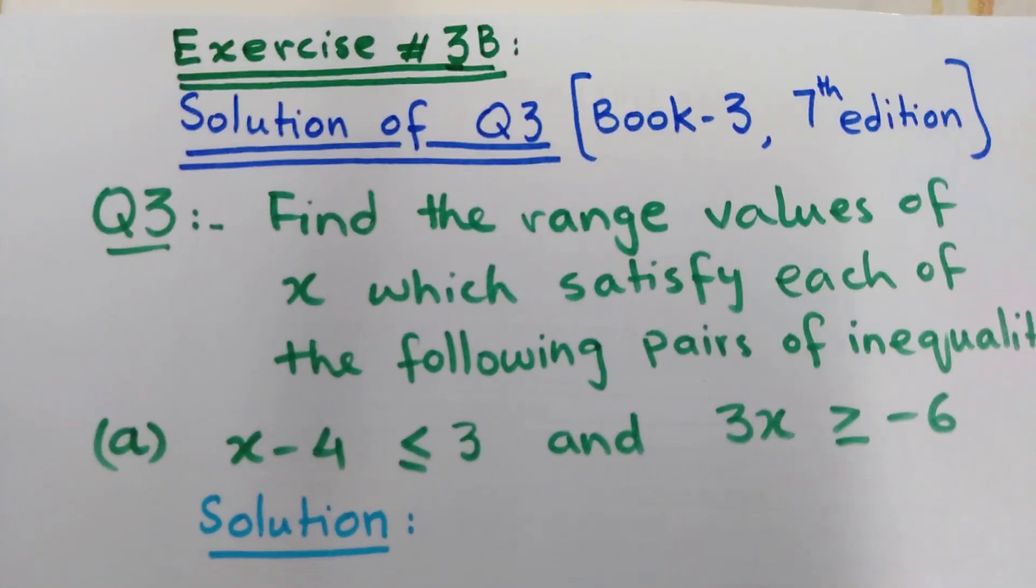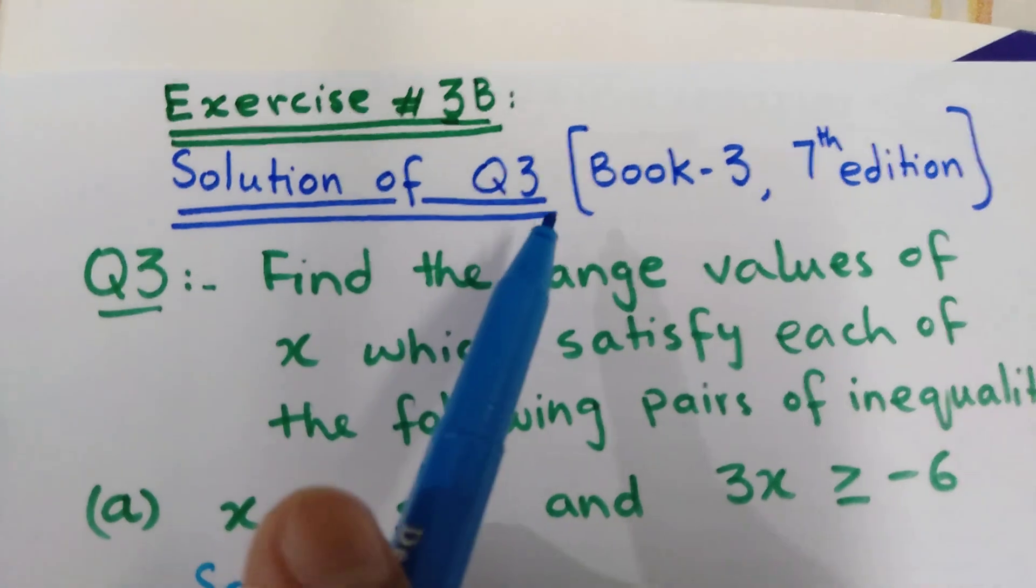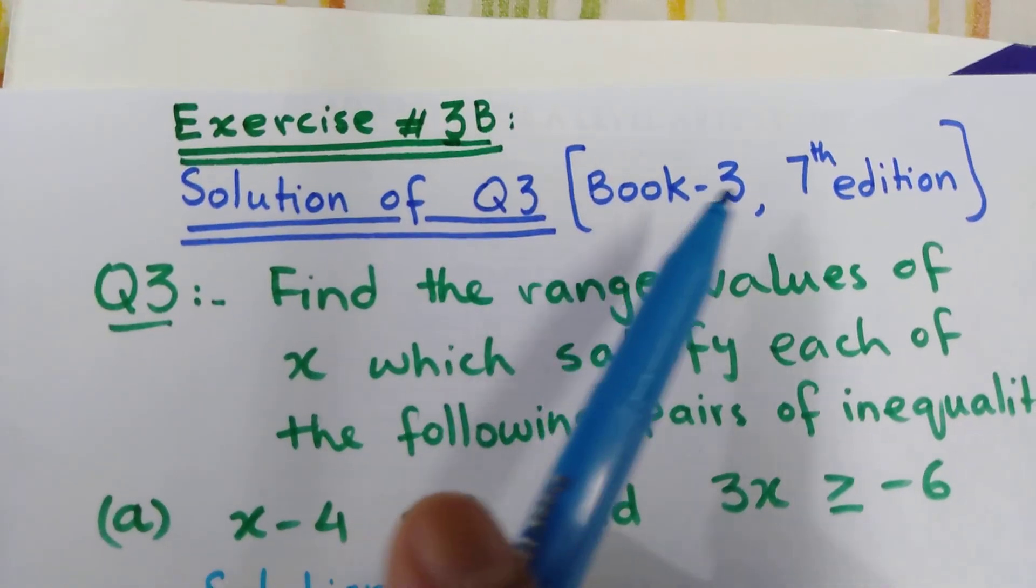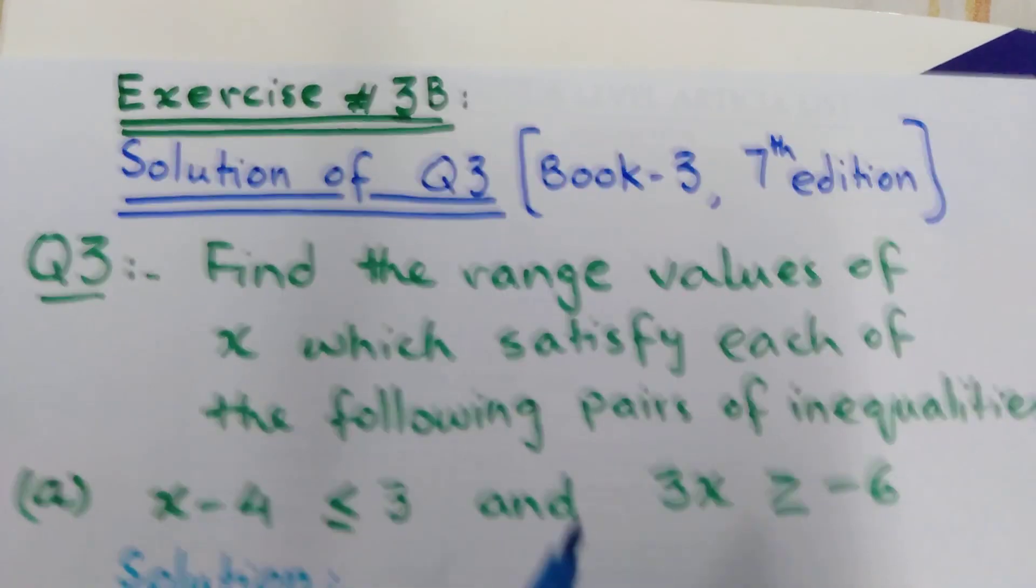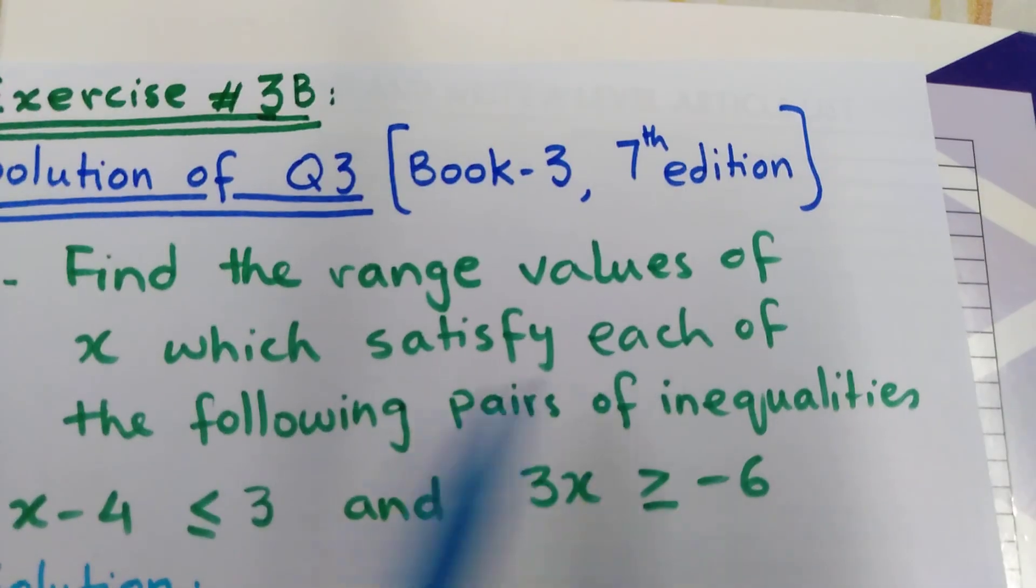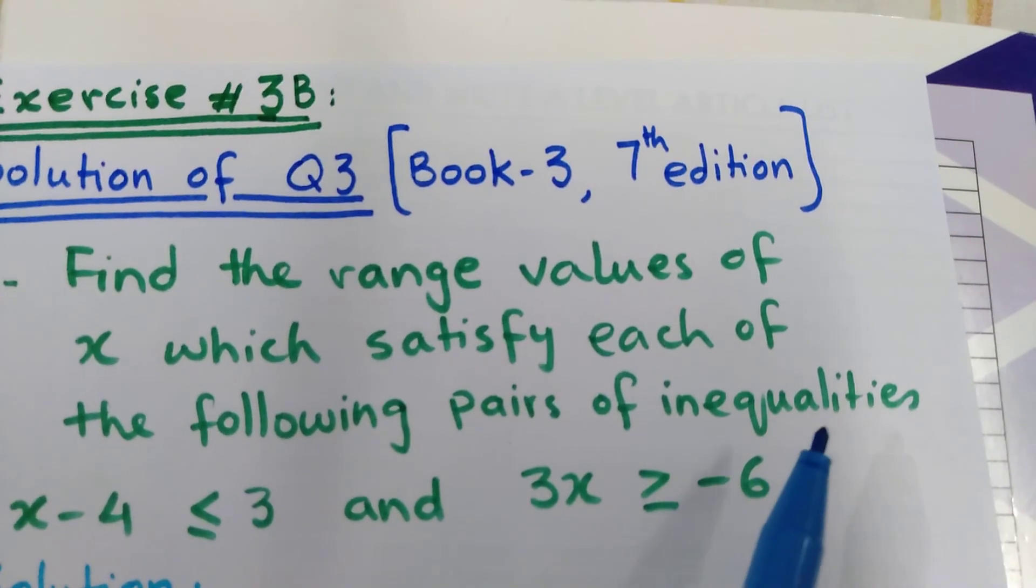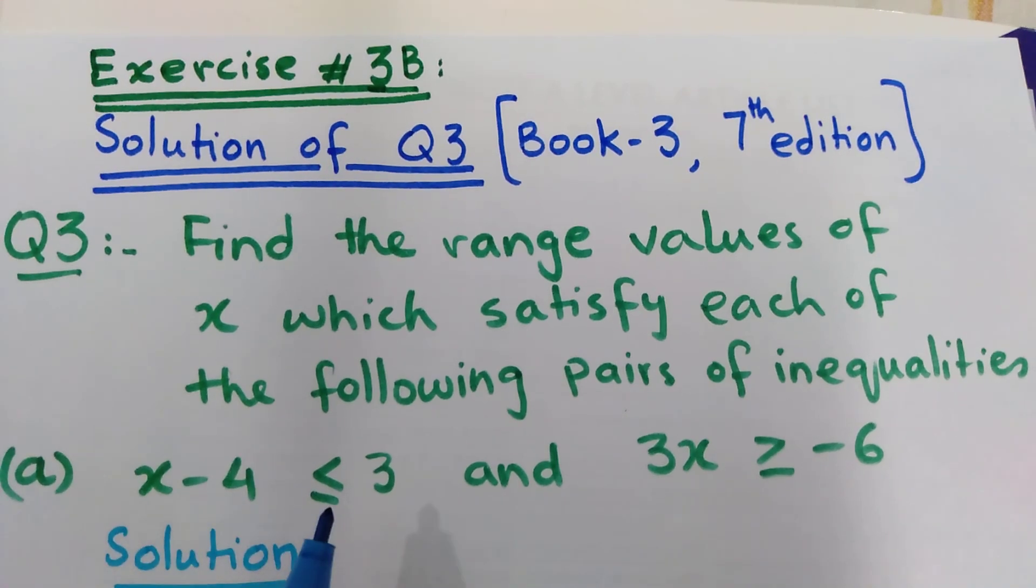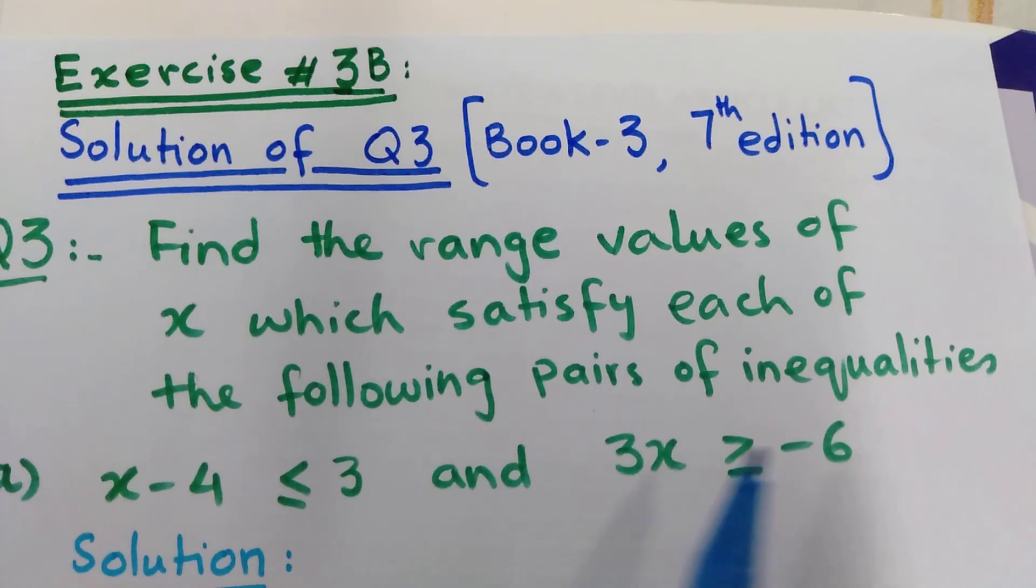Assalamualaikum students. This is a solution of question number 3 from Exercise 3B, Book 3, 7th edition. In this question the examiner asks: find the range values of x which satisfy each of the following pairs of inequalities. There are two pairs of inequalities here: x minus 4 less than or equal to 3, and 3x greater than or equal to minus 6.